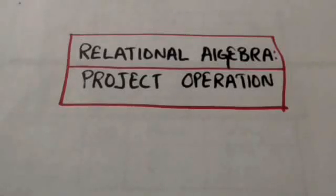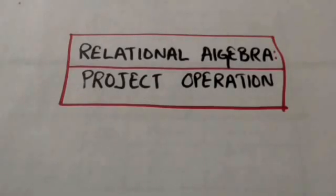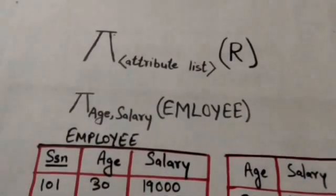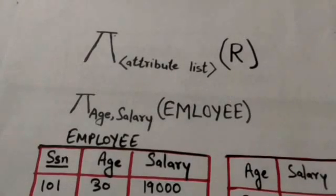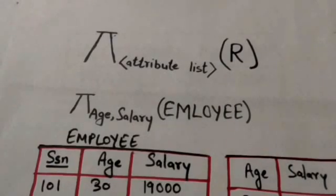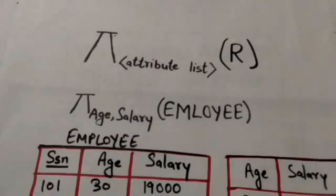Hello friends, welcome back. In this tutorial we will study about the project operation of relational algebra. The project operation is a unary operation. If we think of a relation as a table, then the project operation selects certain columns from the table and discards the other columns.